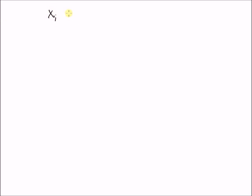Hello, welcome. In this short video, I will prove that sample variance is the unbiased estimator of variance. Given observations x_i that have non-zero mean, that is, expectation of x_i is equal to mu and not equal to zero.